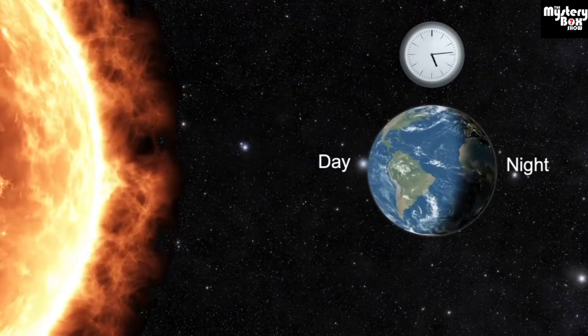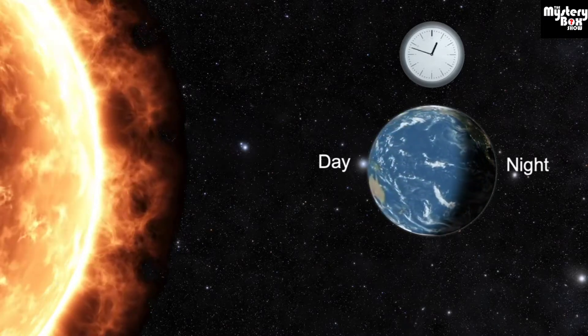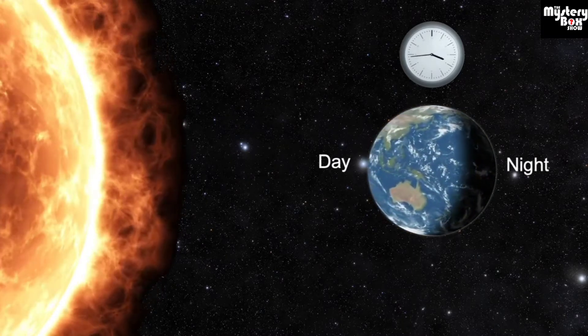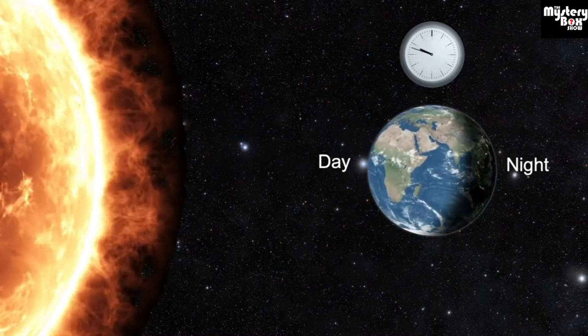It takes the Earth 24 hours to complete one rotation. The repeating rotation of the Earth is why we experience the daily pattern of day and night.